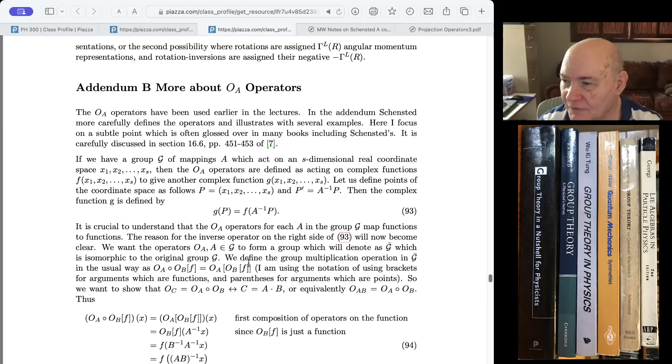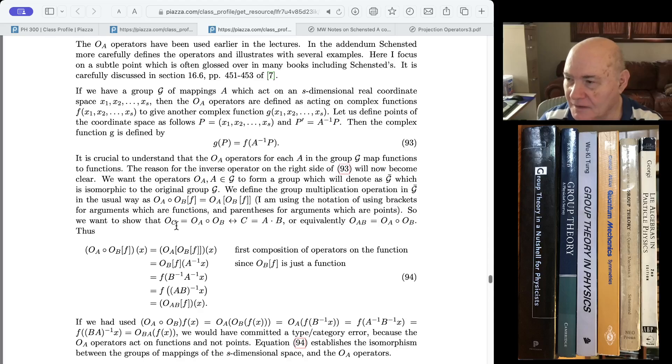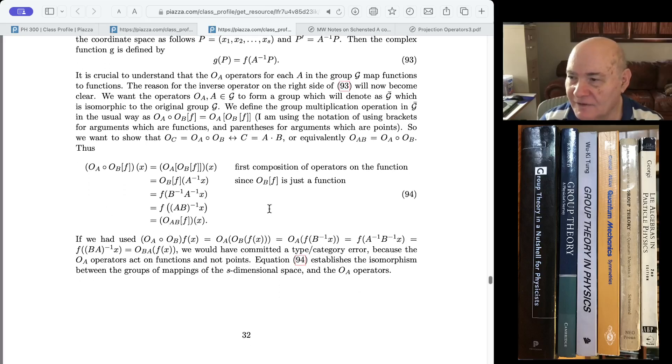And the actual group. So what we want to show is that OA composite OB as the group elements in this mapping group is the same thing as C is A times B. In other words, OAB is OA composite OB. So I wrote down in detail how to show that. Now, so let's look at the first line. Notice I use square brackets for functional arguments. This is the crucial thing. You have to distinguish between points and functions. So if we want to know what OA composite OB acting on the function F at the point X is, this is how we sort of define what the function is.